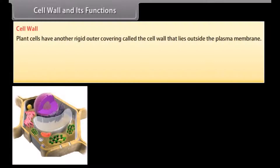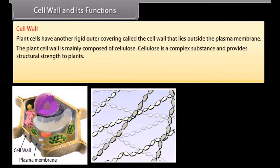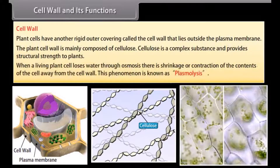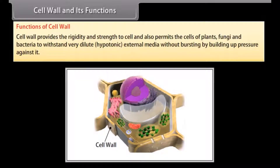The cell wall and its functions. Plant cells have another rigid outer covering called the cell wall that lies outside the plasma membrane. The plant cell wall is mainly composed of cellulose, a complex substance that provides structural strength to plants. When a living plant cell loses water through osmosis, there is shrinkage or contraction of the contents of the cell away from the cell wall — this phenomenon is known as plasmolysis. The cell wall provides rigidity and strength to the cell and also permits cells of plants, fungi, and bacteria to withstand very dilute hypotonic external media without bursting.